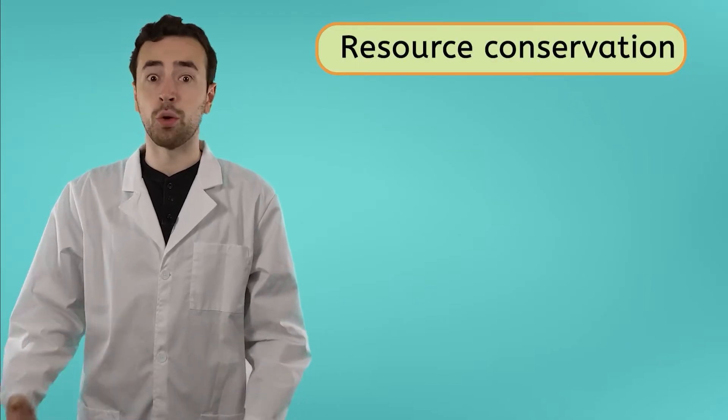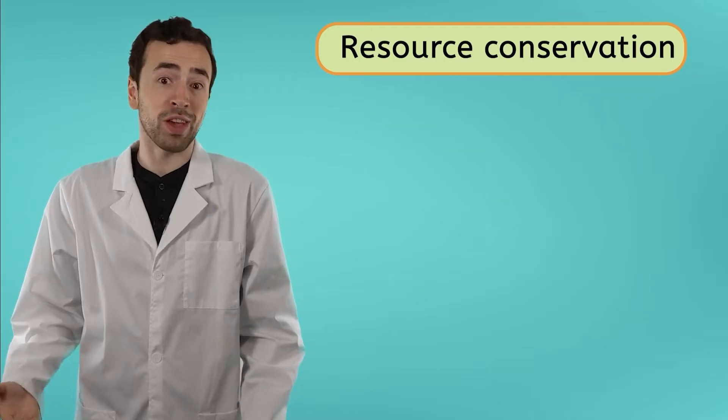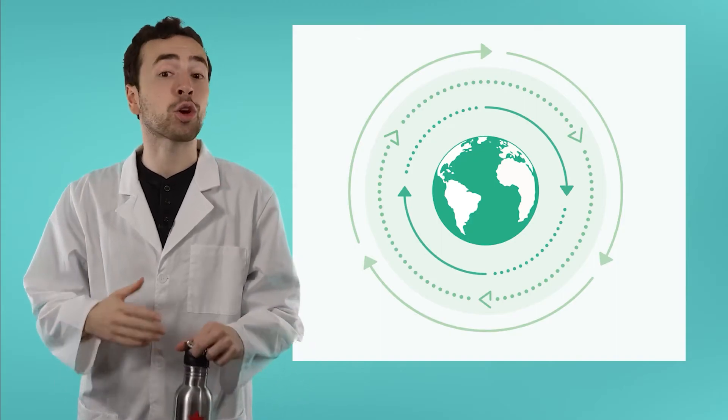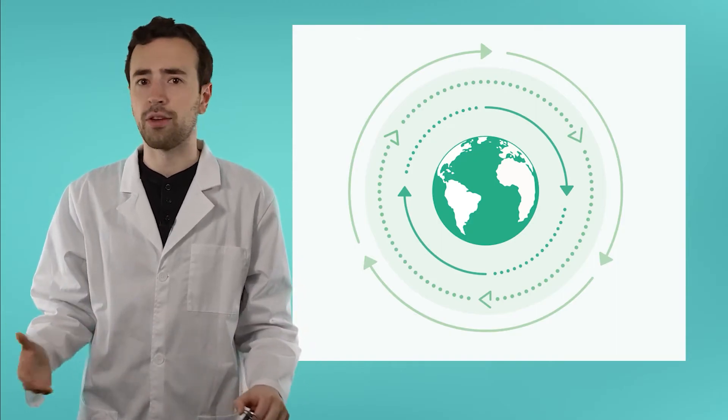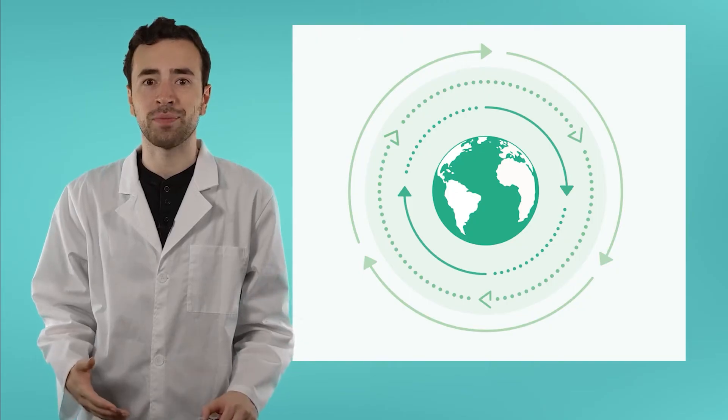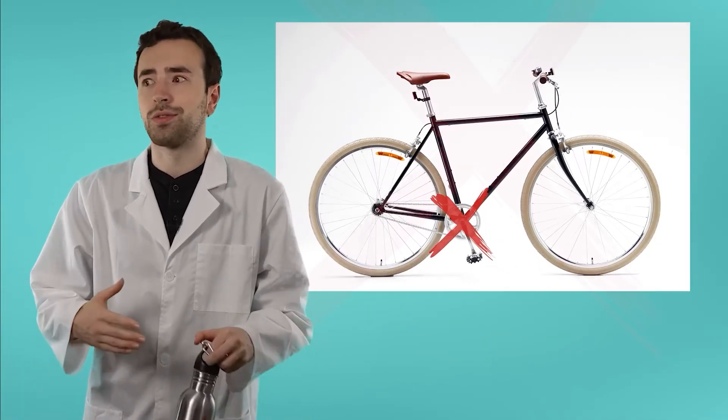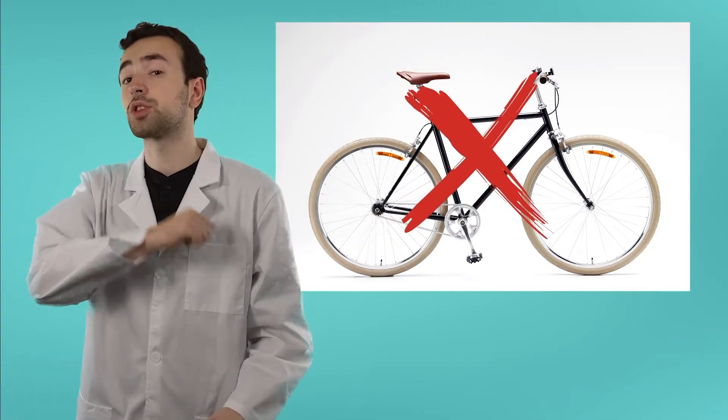Conservation is so important because we are members of a global community. We learned in our lesson on food webs that even small changes can have huge impacts within and across ecosystems. Everything on our planet is interconnected, just like the parts of my bicycle. When one part doesn't work, it affects the whole system. By conserving our resources, we can help to maintain a healthy home for life on Earth today and for future generations.